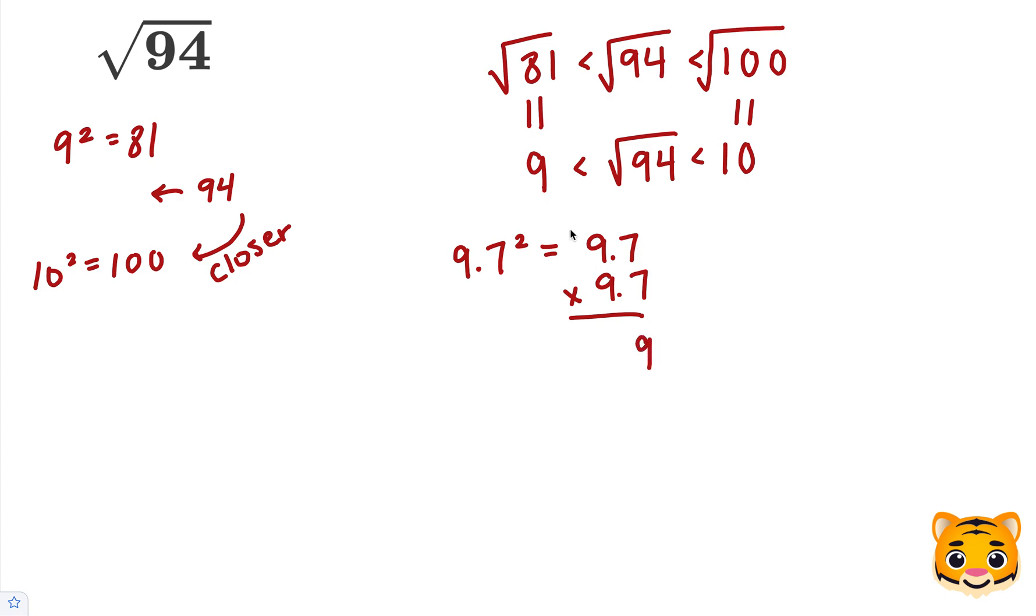7 times 7 is 49, carry the 4. 9 times 7 is 63, plus 4 is 67. Add our 0. 9 times 7 is 63, carry the 6, and then 9 times 9 is 81, plus 6 is 87. Now we need to add these values together. We get 94.09, which we can approximate to 94.